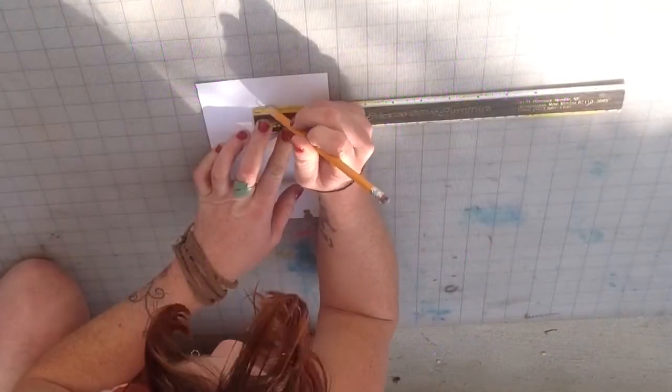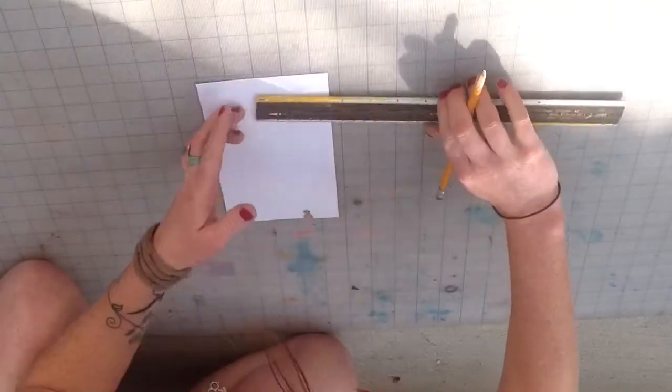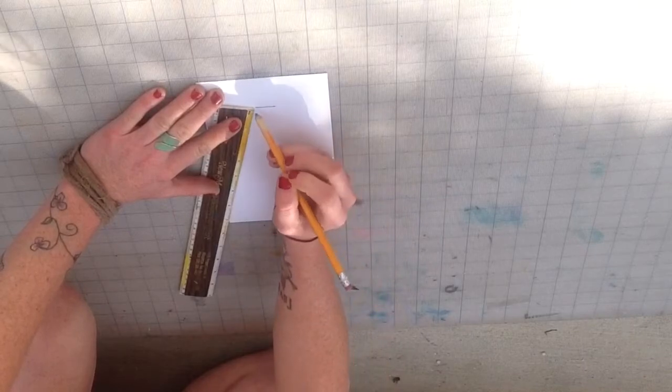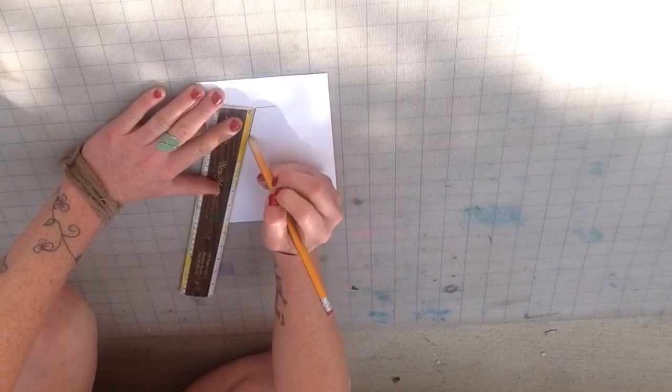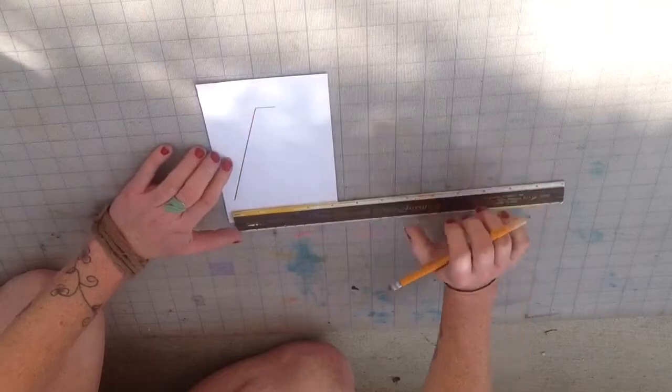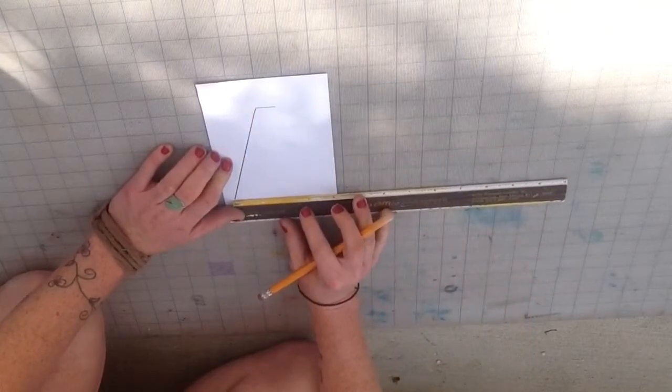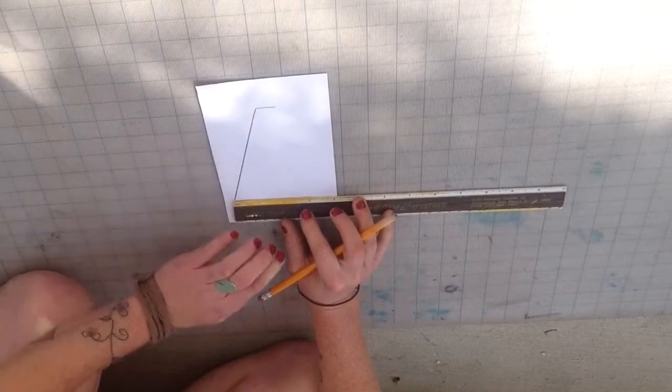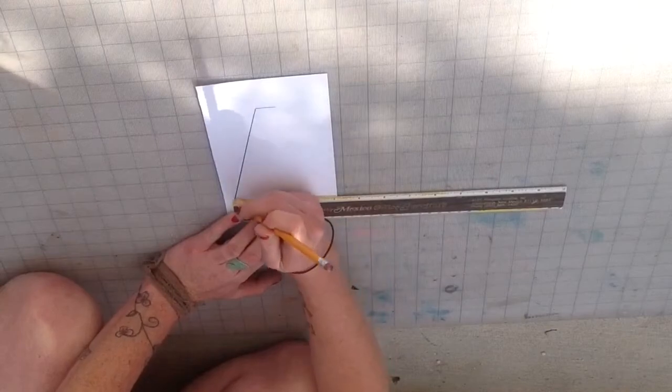Measure 3 quarters of an inch across for the top of the A. Next measure 5 and 3 quarters of an inch down for the first leg of the A. From that point you're going to measure 3 quarters of an inch over for the bottom of the leg.